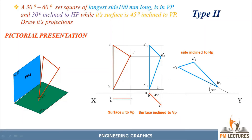We need to reproduce the same parameters here. Take your compass, measure the distance of A1 dash to B1 dash and mark it, similarly C1 dash to A1 dash mark it, and similarly B1 dash to C1 dash put an arc — we get the same curve. Then do the projections from both sides. A1 dash and A will coincide to get A1, B1 dash and B will coincide to get B1, and C1 dash and C will coincide to get C1.